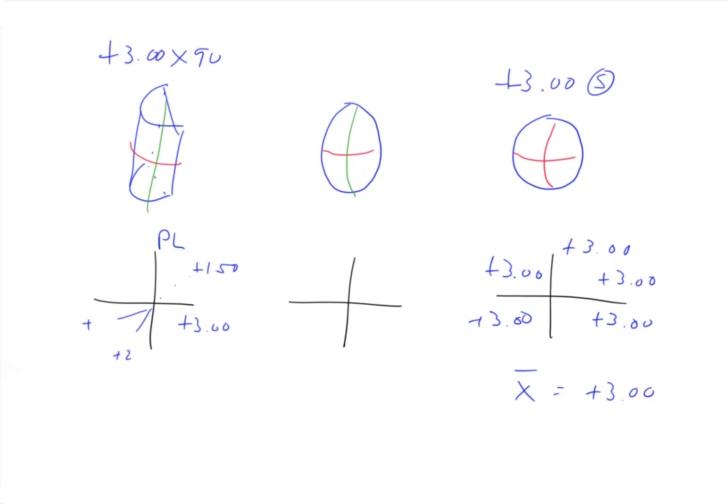So the lowest value anywhere on there is plano. The highest value anywhere on there is plus three. And everywhere else, we have something in between.